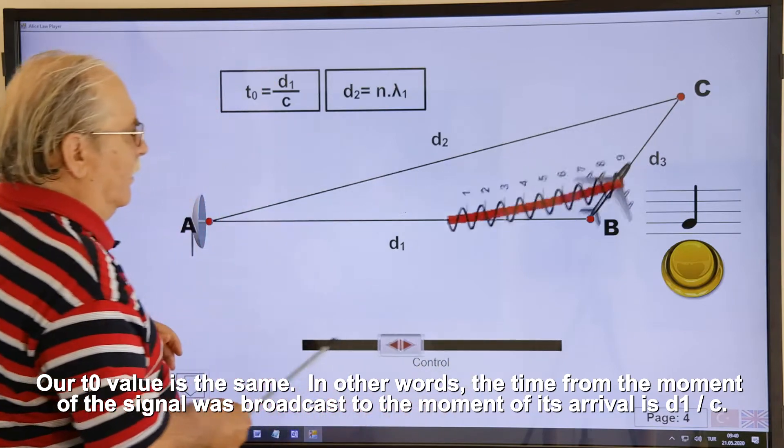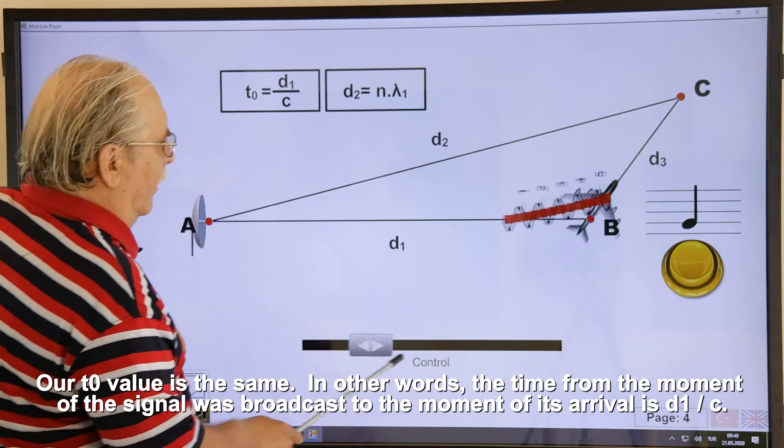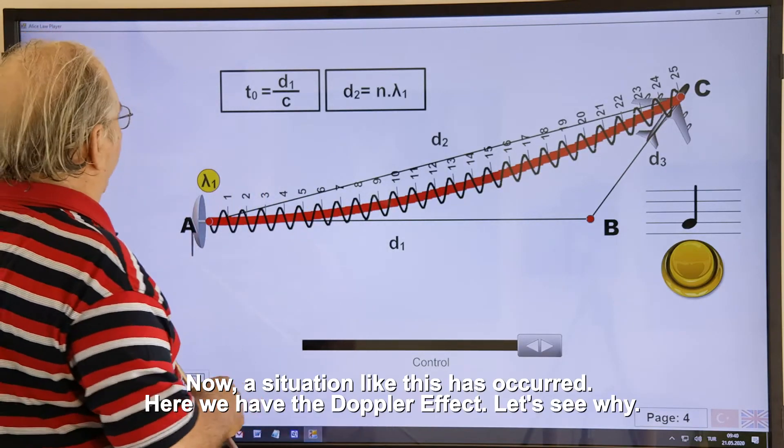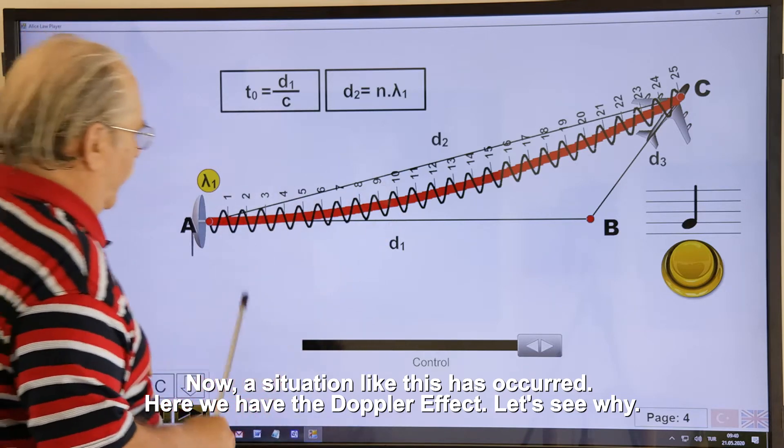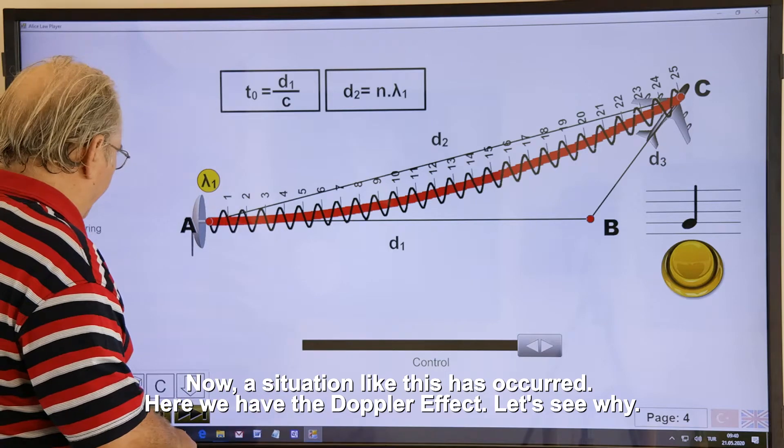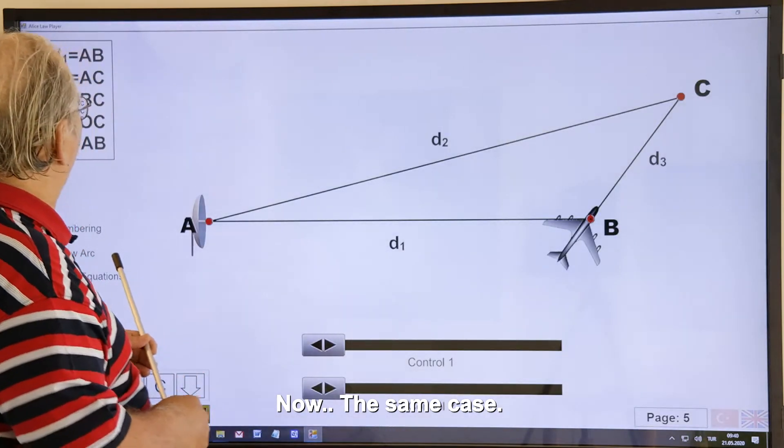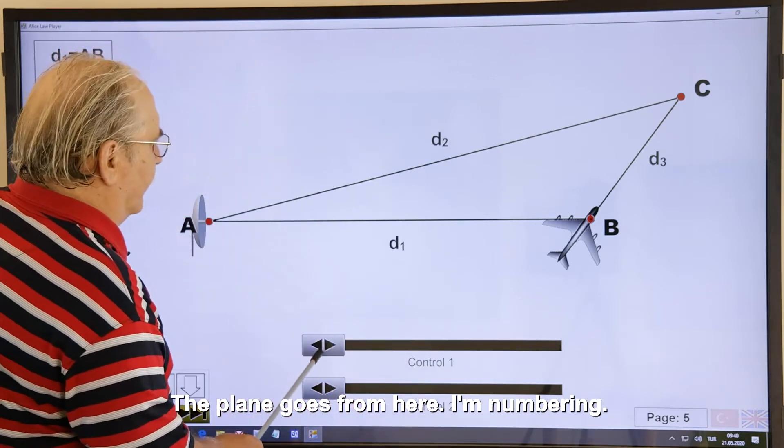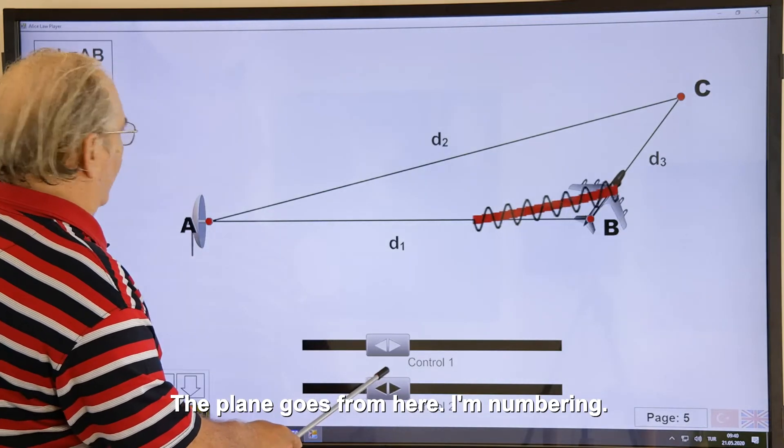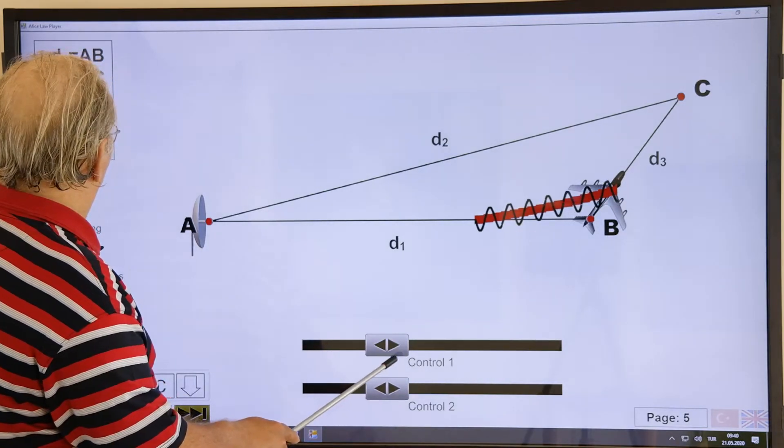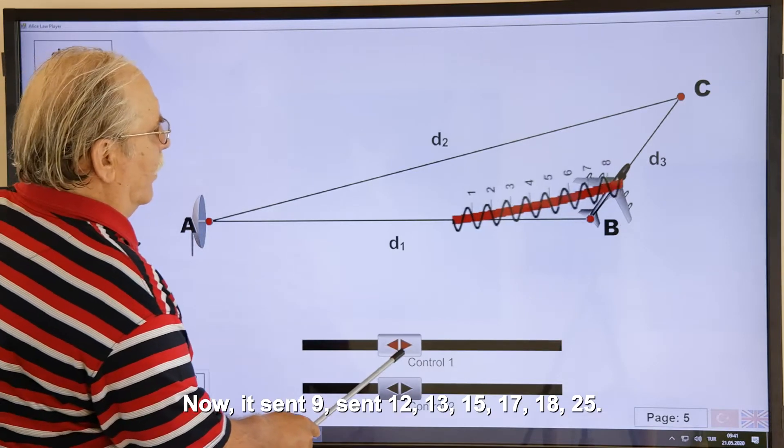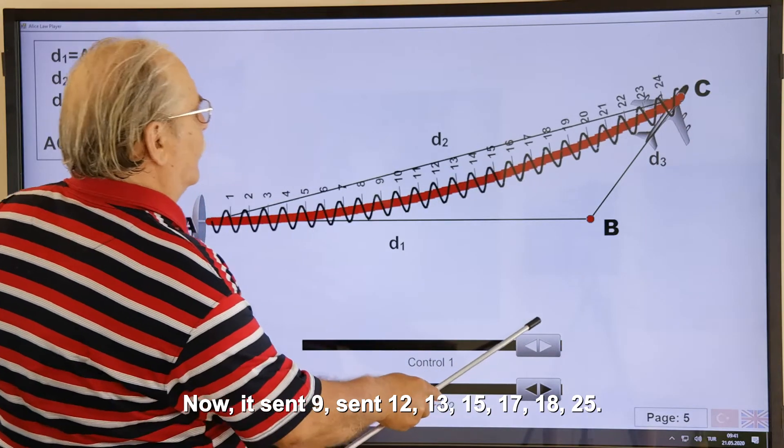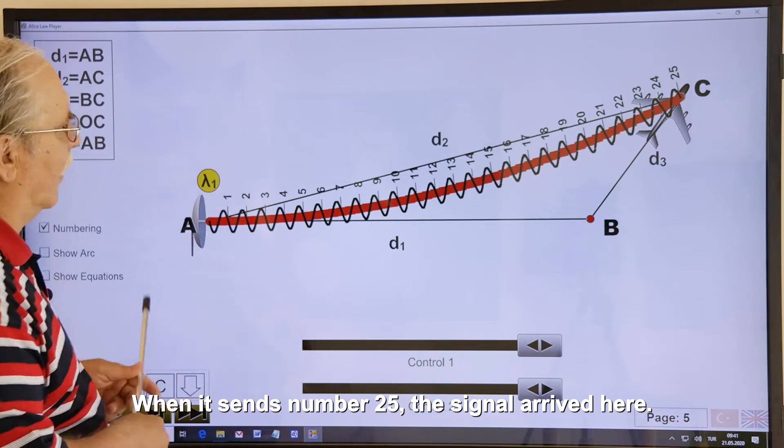Our T0 value is the same. In other words, the time from the moment of the signal was broadcast to the moment of its arrival is D1 divided by C. Now, a situation like this has occurred. Here we have the Doppler effect. Let's see why. Now, the same case. The plane goes from here. I'm numbering. Now, it sent 9, sent 12, 13, 15, 17, 18, 25. When it sends number 25, the signal arrived here.